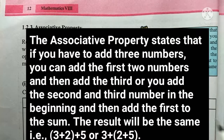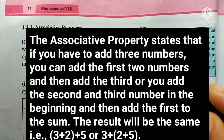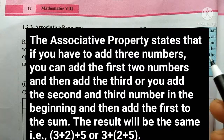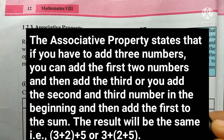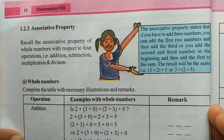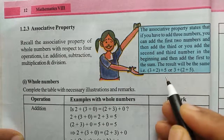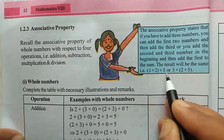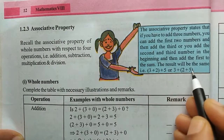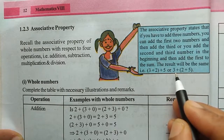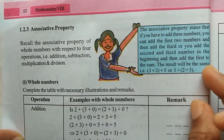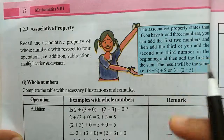So first, let's see the definition. The associative property states that if you have to add 3 numbers, you can add the first 2 numbers and then add the third, or you can add the second and third numbers first and then add the first to the sum. The result will be the same. So if the result is the same, those numbers satisfy the associative property.